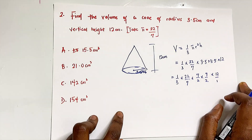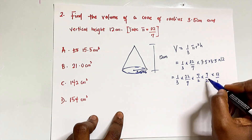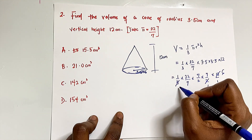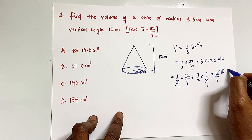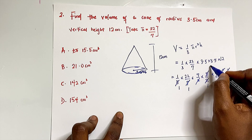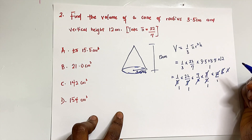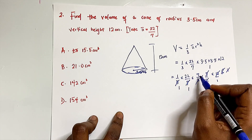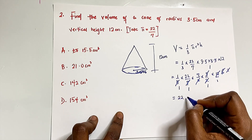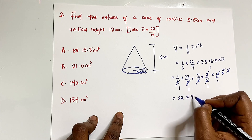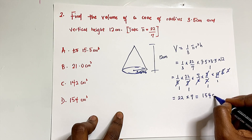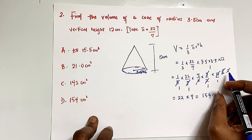Now we cancel common factors: the 2 cancels with 12 to give 6, the 3 cancels with 6 to give 2, and the 7s cancel. We are left with 22 × 7 = 154 centimeters cubed, which is option D.